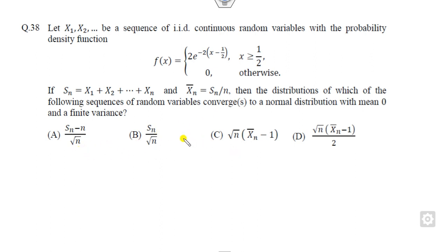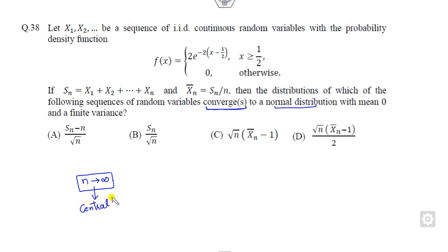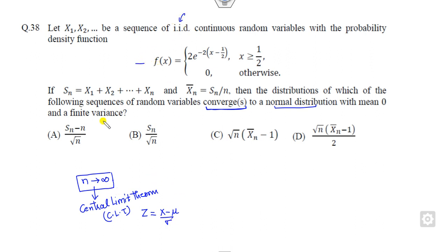First of all, you have to think about what you want to find. You need to find the convergence, and since convergence is related to the normal distribution, whenever n approaches infinity we will work on the Central Limit Theorem. In this question, our target is to convert the expression into the standard form z = (x - μ) / σ.